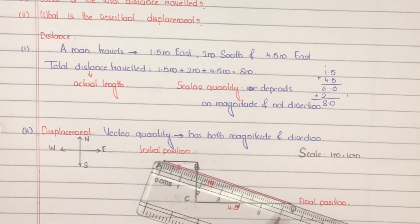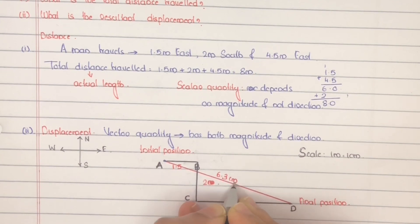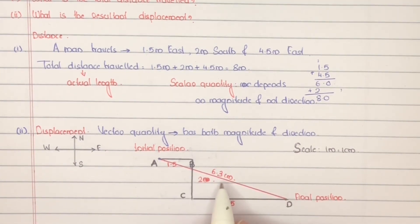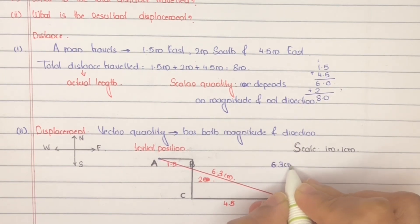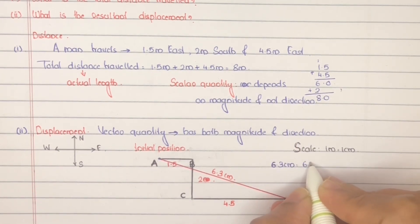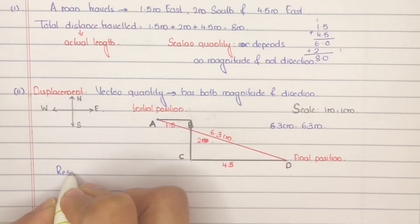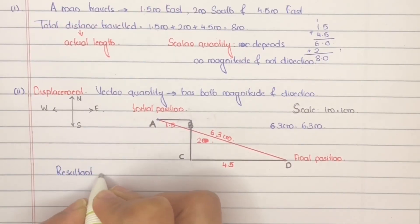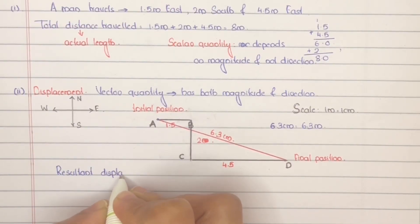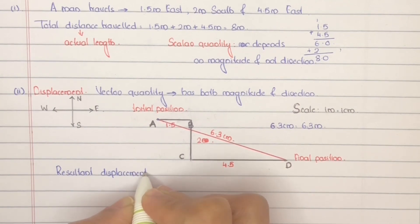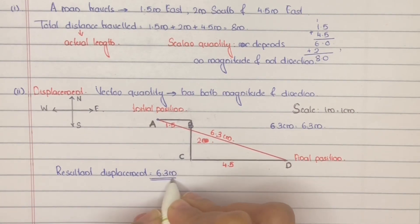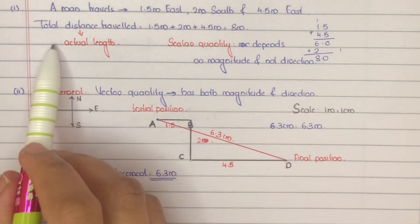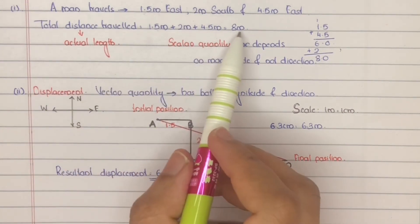The measured length is 6.3 centimeter. Since we assumed 1 meter equals 1 centimeter, the resultant displacement is equal to 6.3 meter. And the total distance is equal to 8 meter.